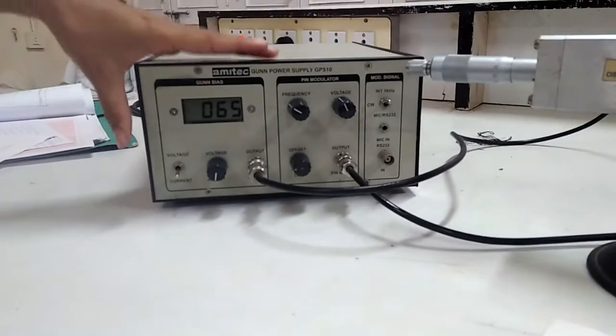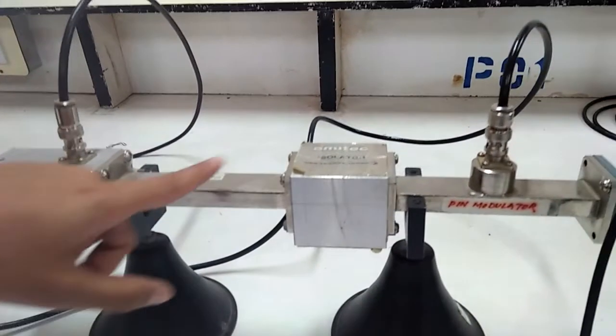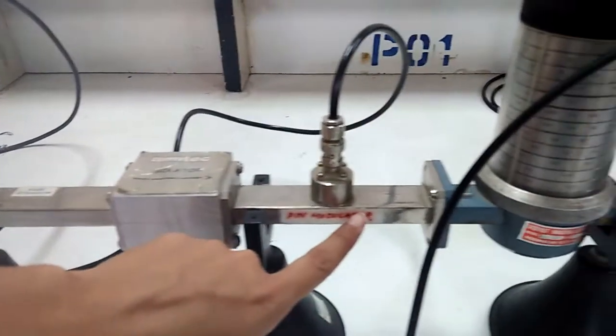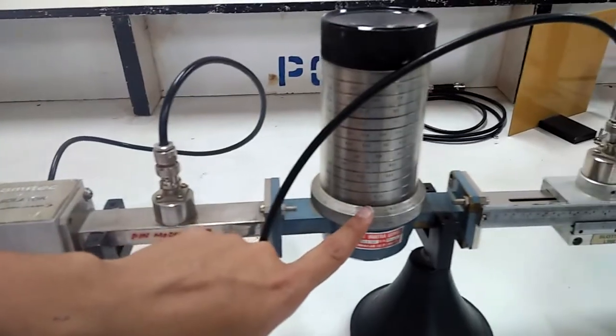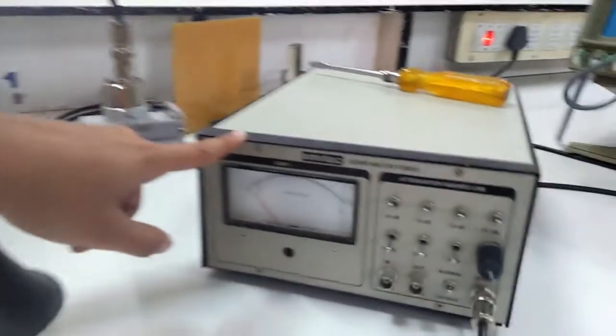The apparatus required are Gunn power supply, Gunn oscillator, fixed attenuator, isolator, PIN modulator, frequency meter, mass termination, and VSWR meter.